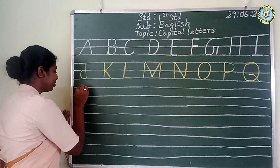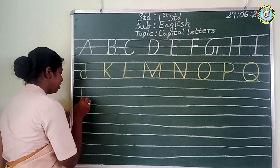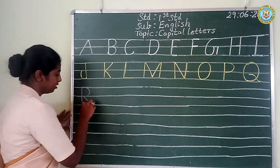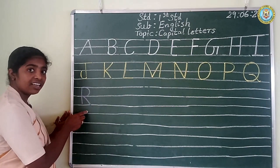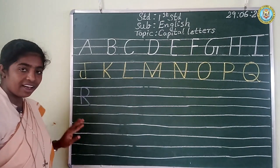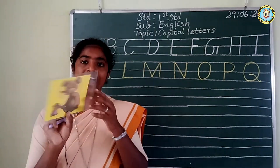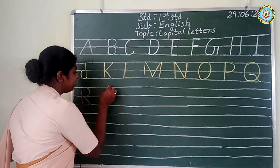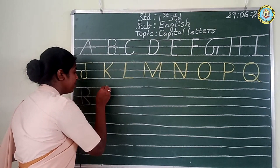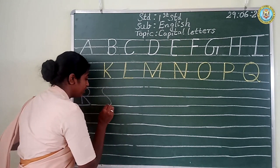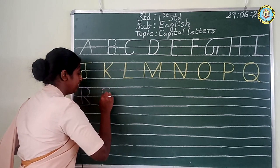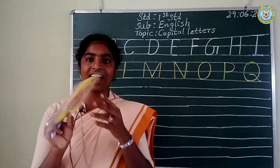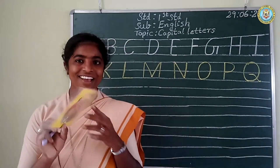Next letter. The straight line and the small curve and the slanting line. Look at the board, children. It is R. R. R for rat. R for rat. Next letter, children. Look at the board. It is S. S for sheep. S for sheep.